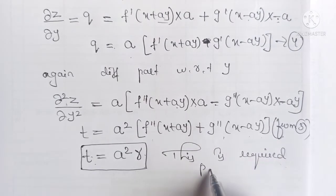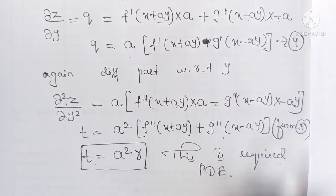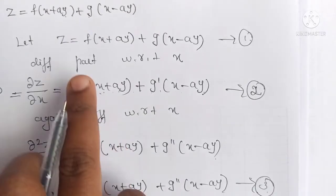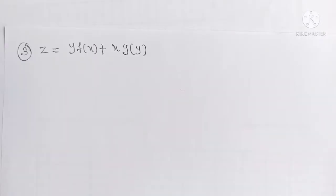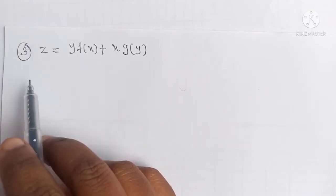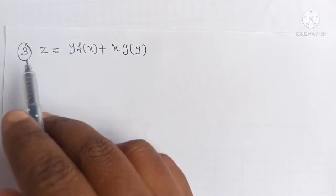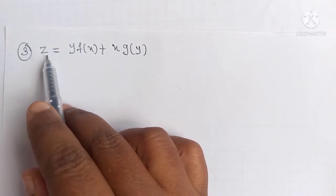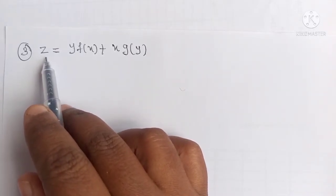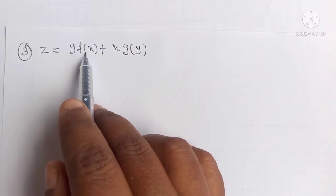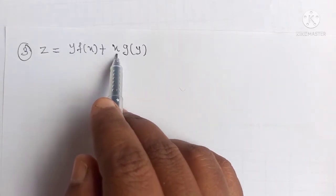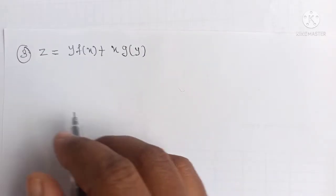So when we have two functions we must differentiate two times — that is, find partial derivatives of second order. Next example: form the PDE by eliminating arbitrary functions given that z equals y·f(x) plus x·g(y). Let this be equation 1.